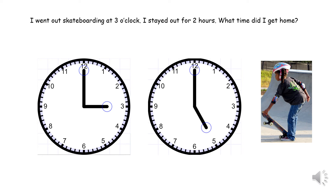I went out skateboarding at 3 o'clock. This means the hour hand must have been on the 3 and the minute hand must have been on the 12. I stayed out for 2 hours, so the hour hand needs to move from the 3 to the 5, as that's 2 hours. I got home at 5 o'clock.